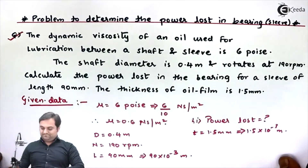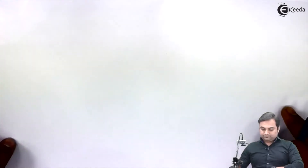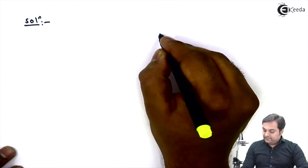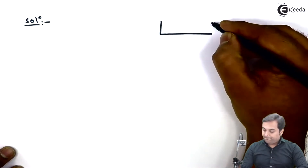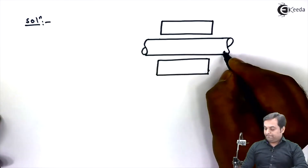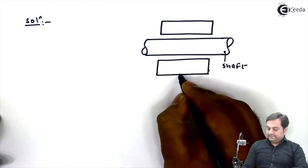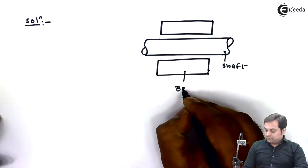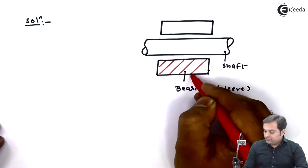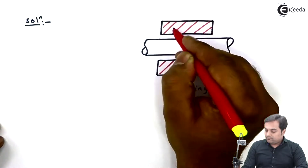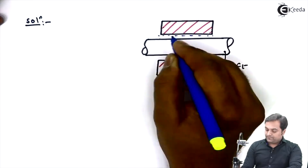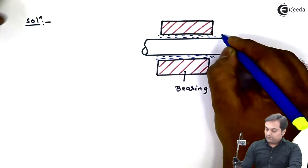Let us try to find the solution. In the solution part, first I'll draw the diagram. It is given that there is a shaft and a sleeve. Here we have a shaft, and the part in which the shaft rotates is called the bearing or sleeve. I am showing this in the form of a section. Between the shaft and the bearing we have an oil film which is used for lubrication.